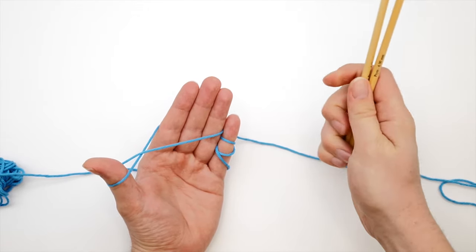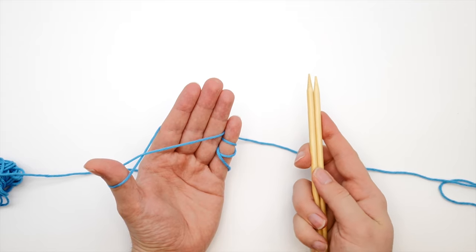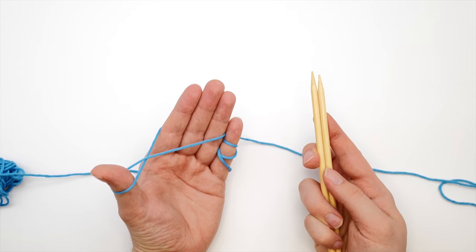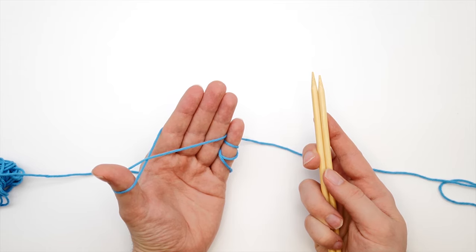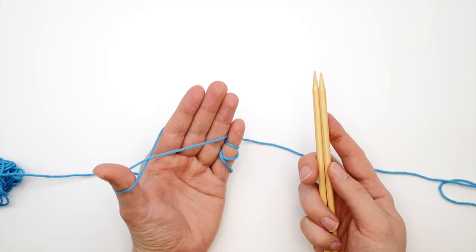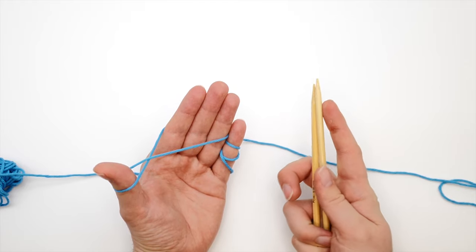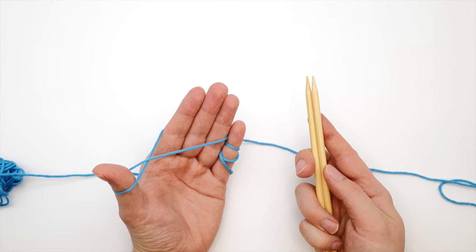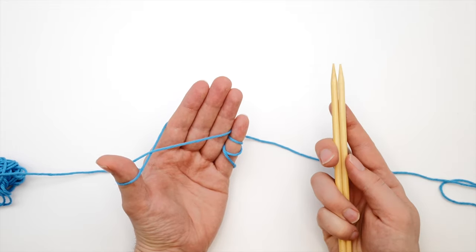So grab the needles. I always do this cast on with two needles because I feel it creates a much stretchier cast on that is much easier to knit. But I know that a lot of knitters do it with one needle only. So try out both and find out which version works for you. For me, it's always with two needles.